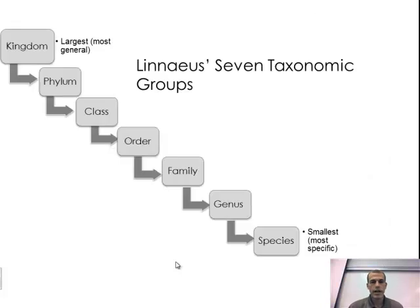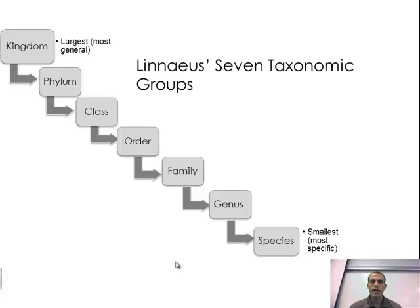You should know the classification levels in order: kingdom, phylum, class, order, family, genus, and species. Kingdom is the largest or most broad — the most general term — and then it gets down to the most specific, which would be the species. The kingdom is kind of the all-encompassing one, and then getting down to the species gives you the specific organism that we're looking at.